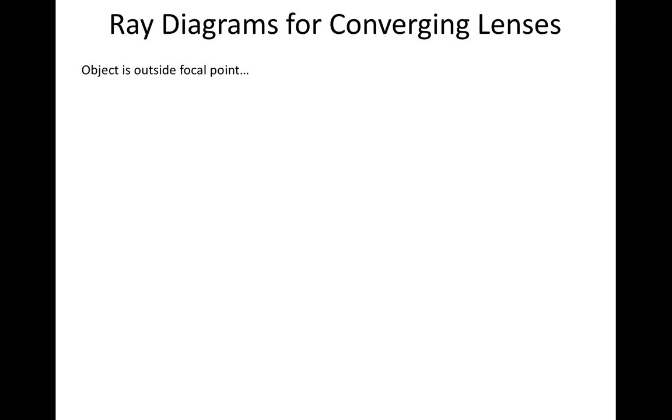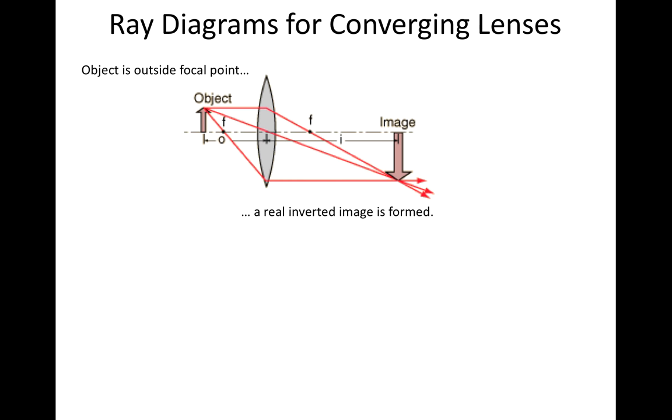So let's check out the converging lens first. Suppose that your object is outside a focal point, something like this. Here's a picture of a converging lens. Here is the focal point, diagrammed by the letter F. And the object is outside the focal length of this lens, to the left of the focal length.